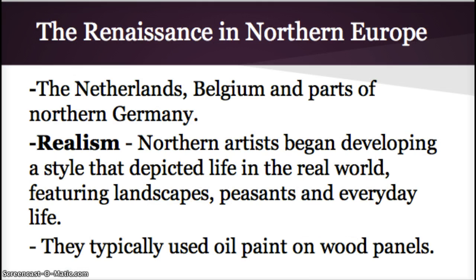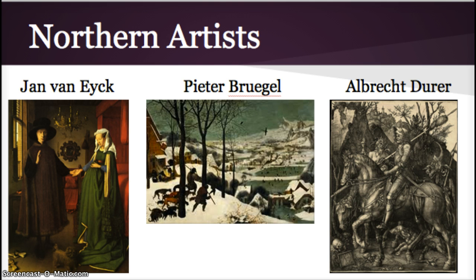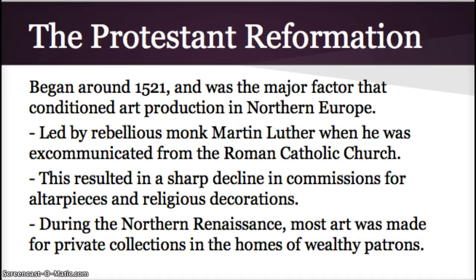In the Northern European Renaissance, artists were even more concerned than Italians with depicting life in the real world. Jan van Eyck was a leading painter in Flanders and was one of the first to use oil painting as a medium — a very significant development. Artists began developing a style depicting realism. Examples include Jan van Eyck's Arnolfini Portrait, Pieter Bruegel's Hunters in the Snow — Bruegel was focused on landscape and the common life of people — and Albrecht Dürer's printmaking work, The Knight, Death, and the Devil.